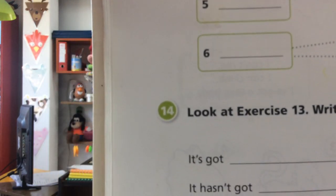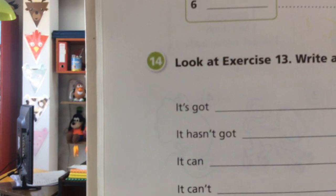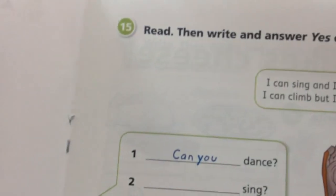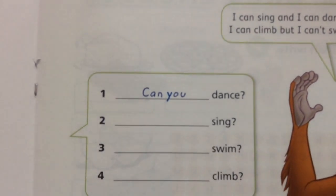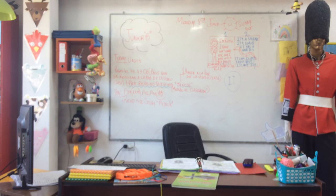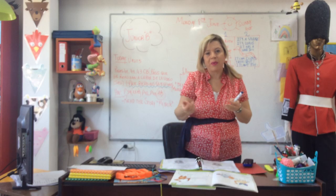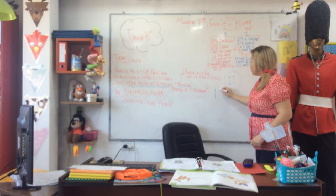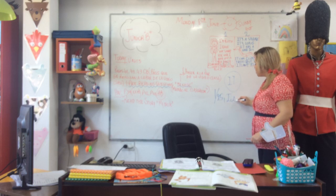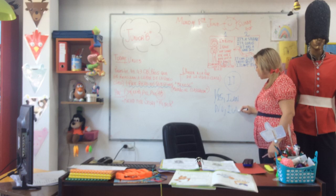Y abajo vas a escribir sobre el animalito: it's got, it hasn't got — al ejercicio 13. It can, it can't. Read and write: yes or no. Can you dance? Viste que te pide poner yes nomás — vos ponele por favor la respuesta completa así practicamos más: yes, I can. No, I can't. No te olvides de la coma — no, coma, I can't.